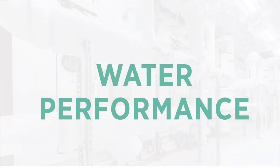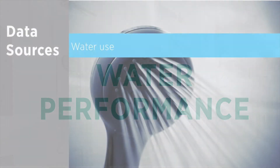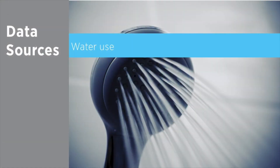Let's review what contributes to the score and how projects earn points from it. To generate a water performance score, projects enter data showing potable water use for the project. The score is then calculated based on occupancy, gross floor area, operating hours, and daily potable water use.